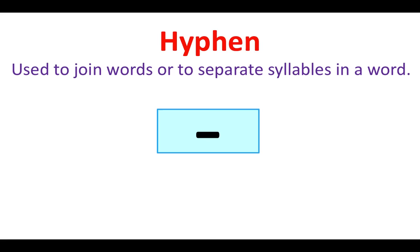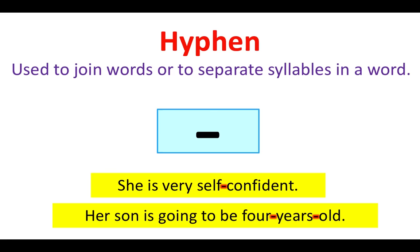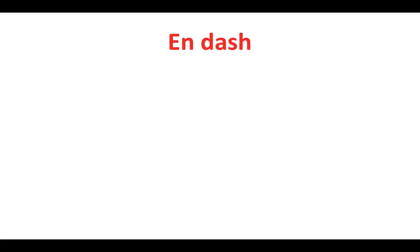Hyphen. A hyphen is used to join words or to separate syllables in a word. For example: She is very self-confident. Her son is going to be 4-years-old.